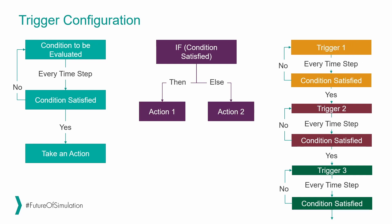With the last option you can model nested triggers. Once you define trigger number one, the simulator evaluates the condition every time step. When the condition is satisfied it enters a second trigger, evaluates the condition every time step, and when that condition is satisfied it enters an additional trigger. You can have as many nested triggers as you want.